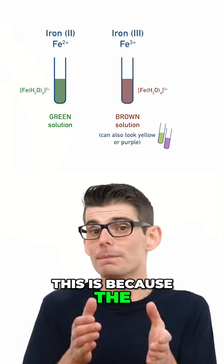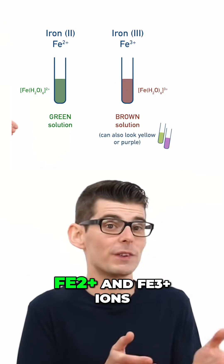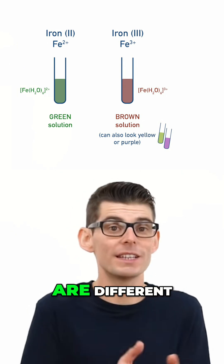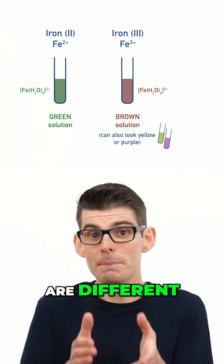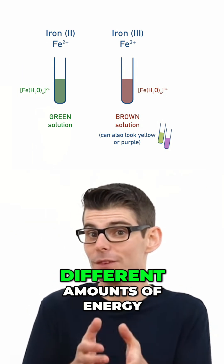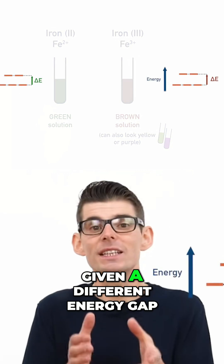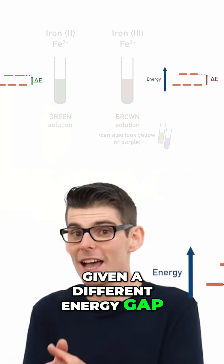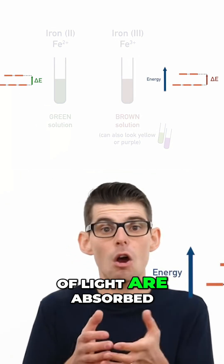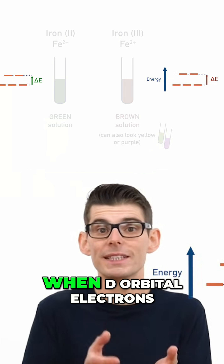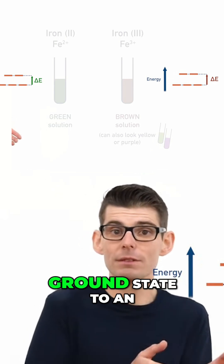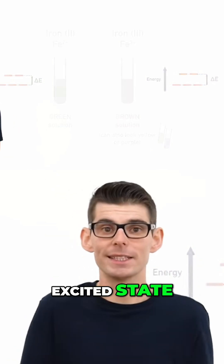This is because the mass-to-charge ratio for the Fe2+ and Fe3+ ions are different, meaning their outer d orbitals are split by different amounts of energy, giving a different energy gap, and meaning different wavelengths of light are absorbed when d orbital electrons get excited from their ground state to an excited state.